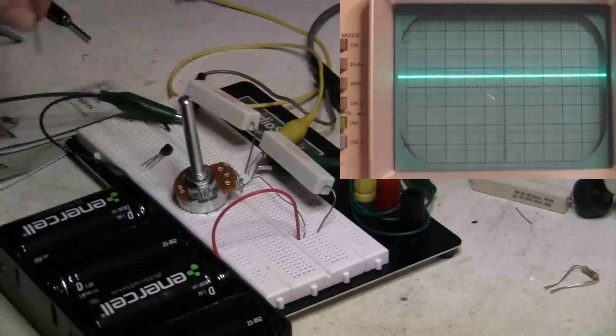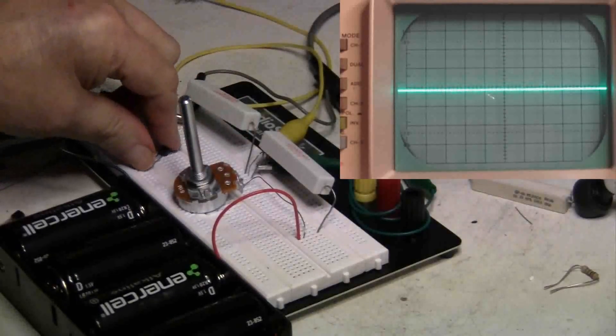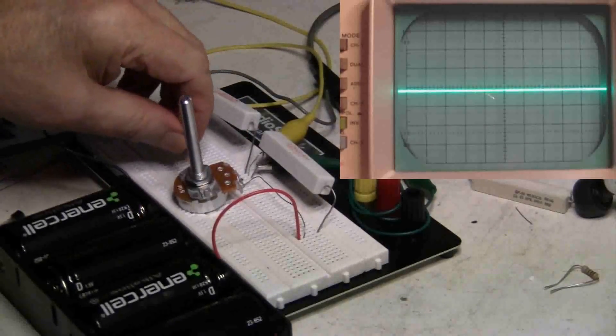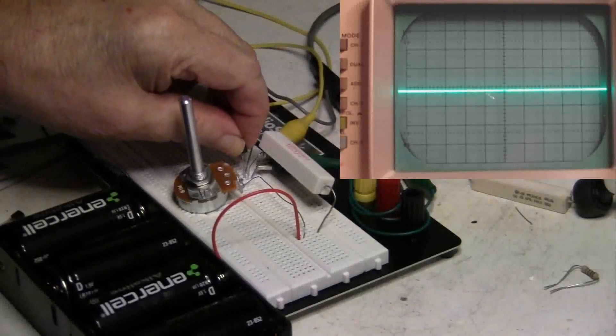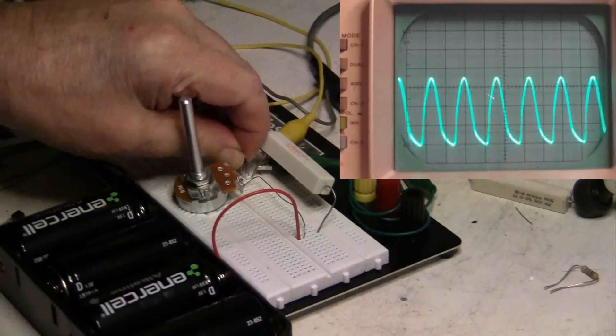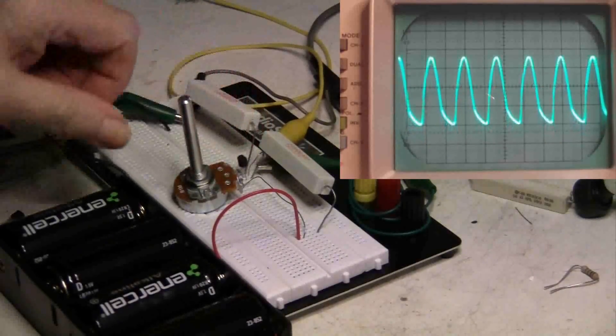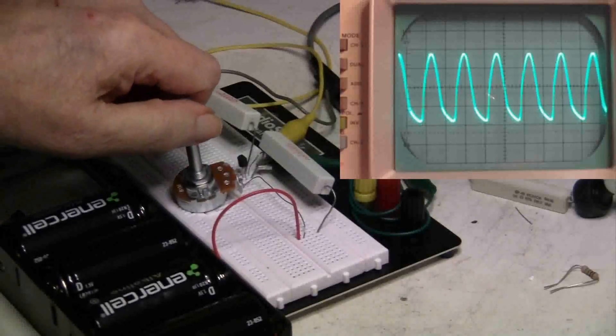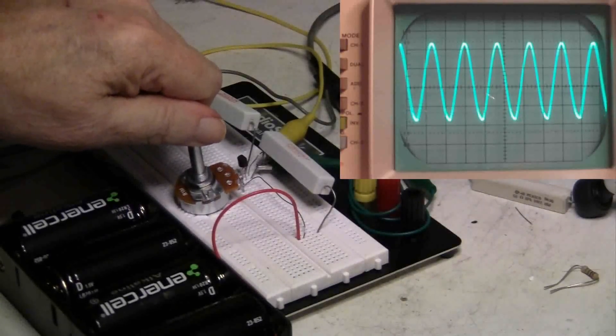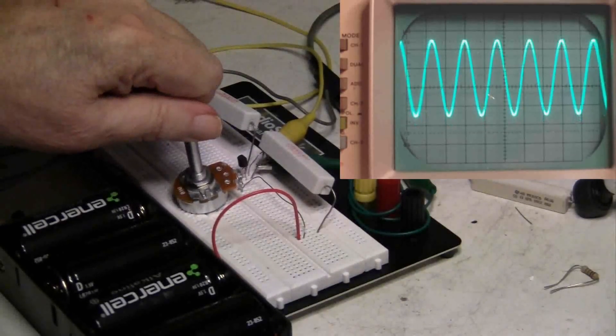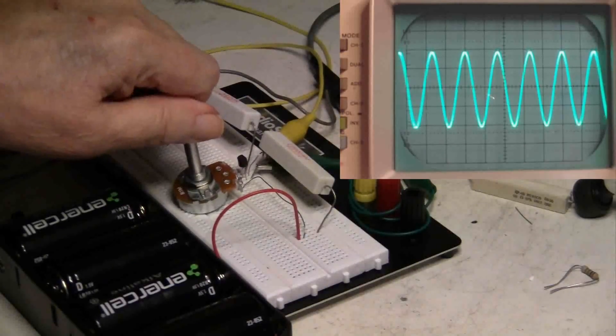Taking that transistor out and I'll put back in the transistor of 325 beta. And notice that I've got to adjust it in the other direction to get a nice signal again.